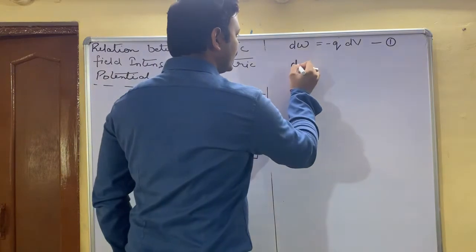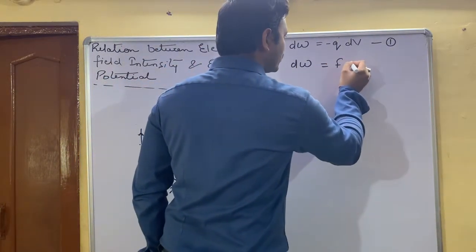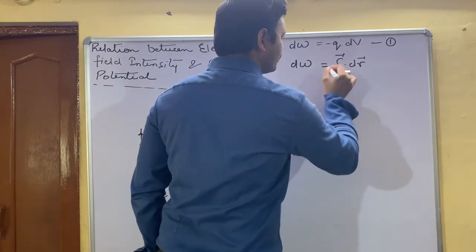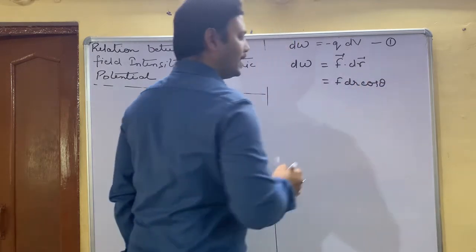Now if we go for the second equation, the basic formula of work done is F dot dr with a vector sign. On breaking these two, F dr cos theta.